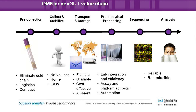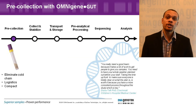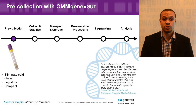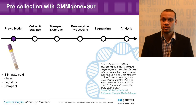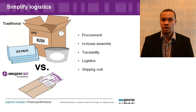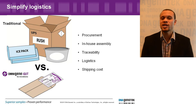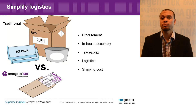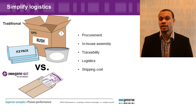Now back to the full end-to-end integration. We refer to this as the omni-gene value chain. Starting with pre-collection on this value chain, we wanted to completely eliminate the cold chain transport requirements. By doing so, you're able to significantly simplify shipping logistics and there's no need to worry about procurement, in-house assembly, and traceability.